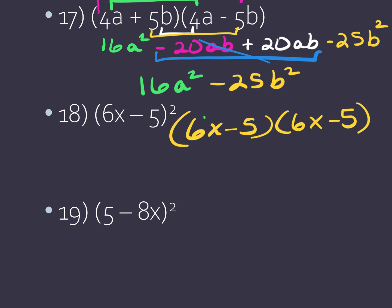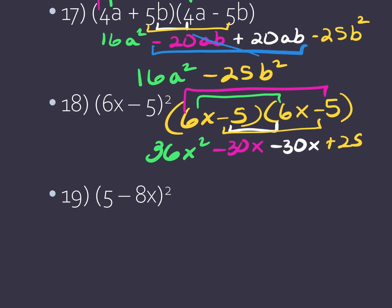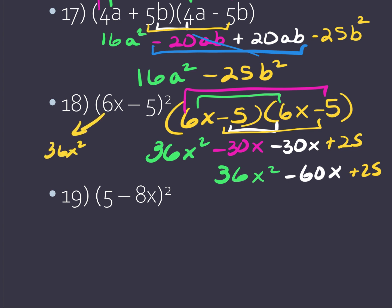So I'm going to do 6x times 6x — gives me 36x squared. Then I'm going to do the two outer and get negative 30x. Then I'm going to do the inside and get negative 30x. And then finally do last, which gives me positive 25. Notice the middle terms do not cancel out. I am left with a negative 60x and then plus the 25. So if you just tried to square 6x and square 5, you would miss out on this 60 and get it wrong.